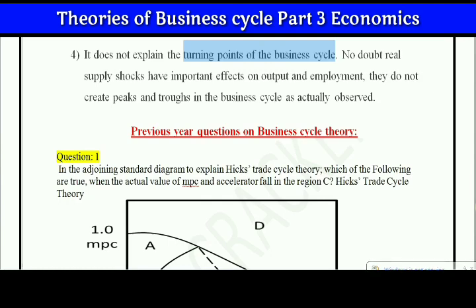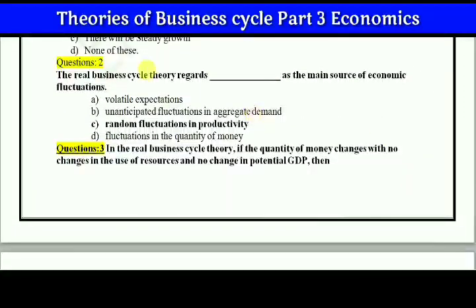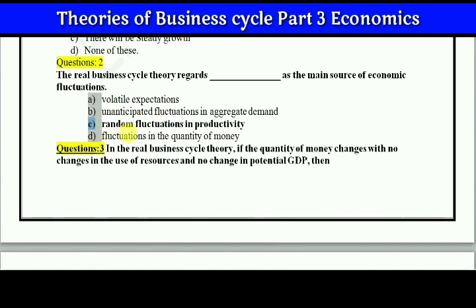Now we discuss some previous year questions. The real business cycle theory regards what as the main source of economic fluctuation? Options: volatile expectations, unanticipated fluctuation in aggregate demand, random fluctuation in productivity, or fluctuation in the quantity of money. The correct answer is option C — random fluctuation in productivity. The real business cycle theory regards random fluctuation in productivity as the main source of economic fluctuations.